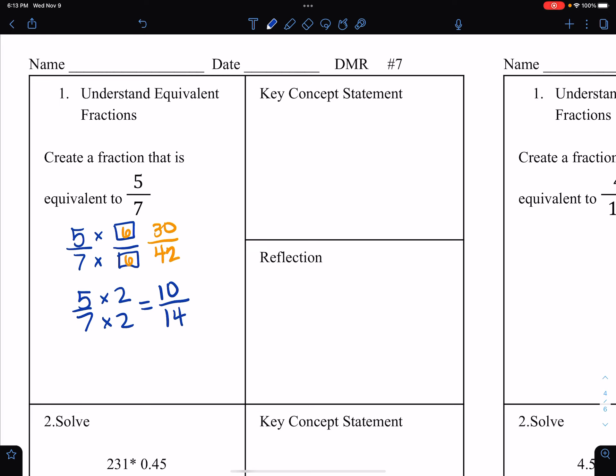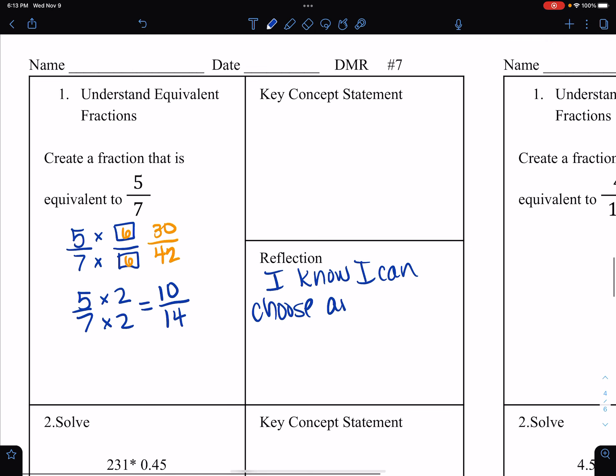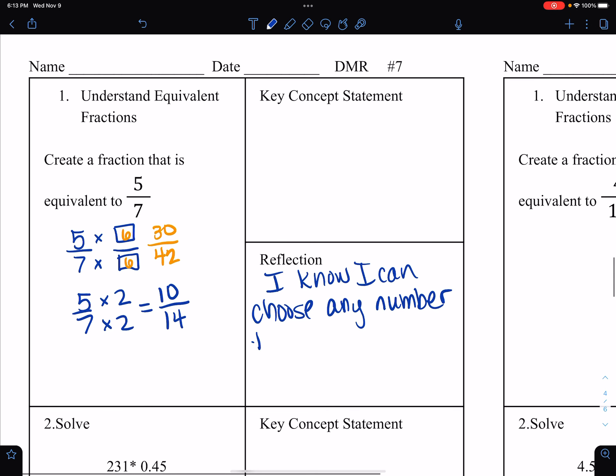Reflection: I know I can choose any number to multiply the numerator and denominator as long as it's the same. So I'm not going to write that, but you know what it means.